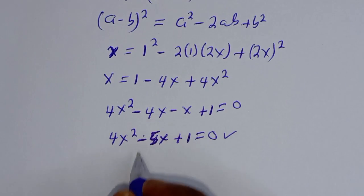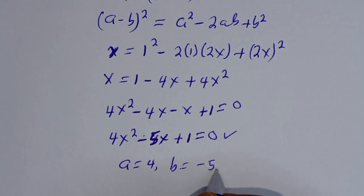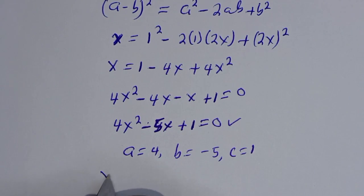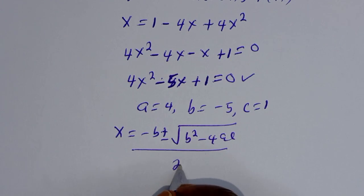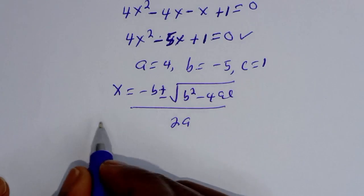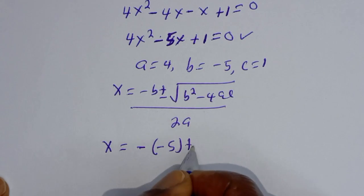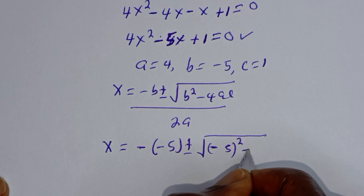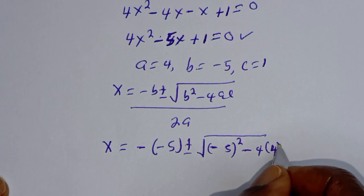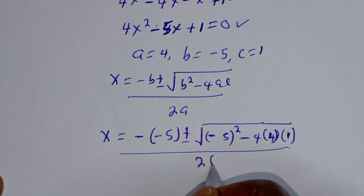In this case, I am going to use the quadratic general formula. From this quadratic equation, a is equal to 4, b is equal to minus 5, c is equal to 1. Then s is equal to minus b plus or minus square root of b squared minus 4ac, over 2a. So s is equal to minus(minus 5) plus or minus square root of (minus 5) squared minus 4 times 4 times 1, over 2 times 4.